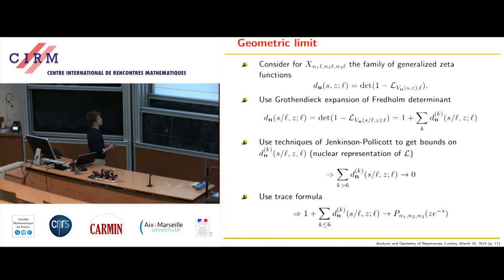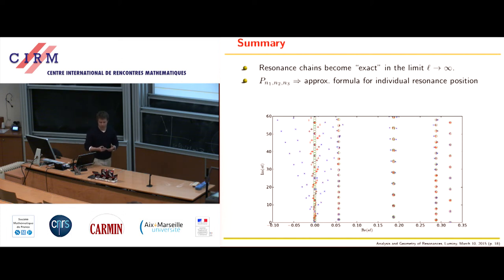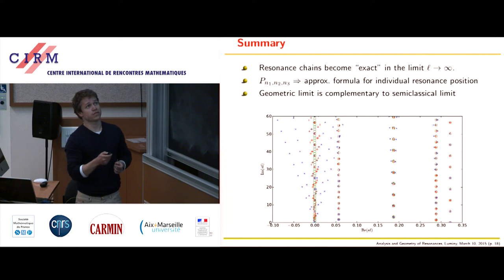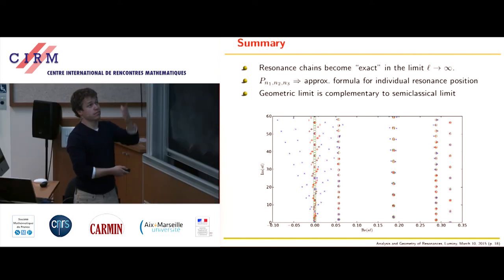Let me summarize what we've seen in the second part. The resonance chains become exact in the limit L towards infinity in these geometric limits, but you have to rescale the resonances to see something interesting at all. These simple polynomials give approximate formulas for the individual positions of resonances. These formulas for individual positions are in some sense complementary to the semi-classical limit: here we fix a finite number of resonances and take the geometric limit, whereas in semi-classical analysis you fix the surface and take the imaginary part towards infinity, letting the number of resonances go to infinity.